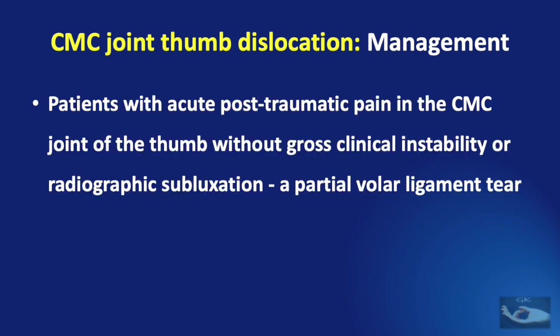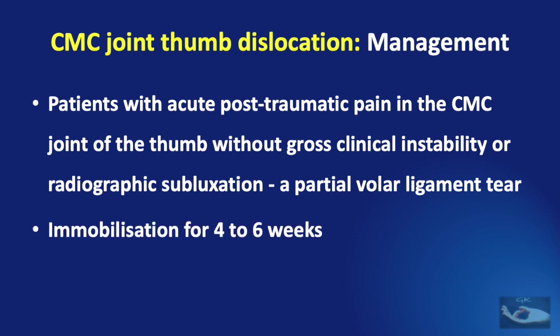Sometimes patients presenting with acute post-traumatic pain in the carpometacarpal joint may not have gross clinical instability or radiographic evidence of subluxation or dislocation. In such cases, a diagnosis of partial volar ligament tear should be made and managed with immobilization for four to six weeks.